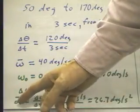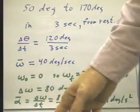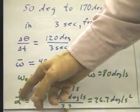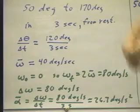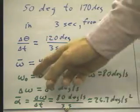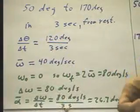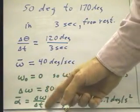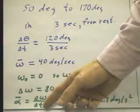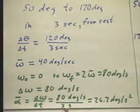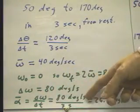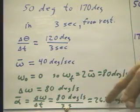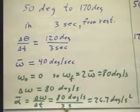And our angular acceleration, which is alpha, remember I said alpha and omega, this is alpha bar, average angular acceleration, and of course if we have uniform acceleration, which we assumed, this is just the acceleration. That's going to be changing velocity over time, but it's angular velocity. No difference in the way we think about it, but we symbolize it a little bit differently. And that's 80 degrees per second divided by 3 seconds, which is 26.7 degrees per second per second.